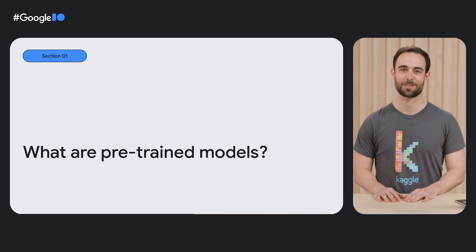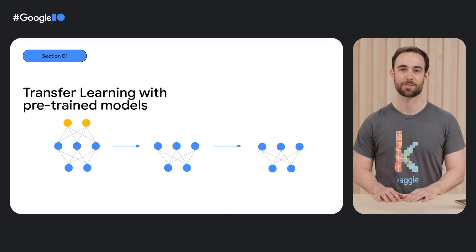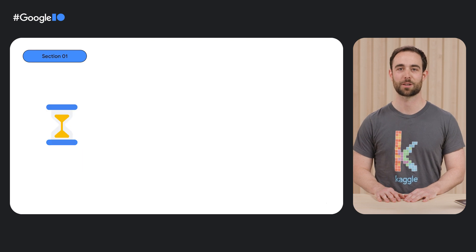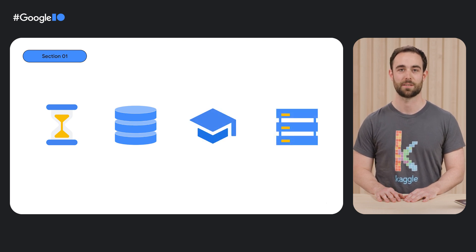Do you have a machine learning problem but only limited data you can use to solve it? Or maybe you're looking to improve your performance in a Kaggle competition. For these and many other cases, pre-trained models can help. Pre-trained models are machine learning models that have been trained on a large dataset and which have learned general features or patterns in data, which you can use or fine-tune to your own problem in a process called transfer learning. Building machine learning models from scratch can take a lot of time, use a lot of data, require specific expertise, and be resource-intensive. Starting with a pre-trained model can give you a head start on your own task, saving you time and money. Because of these benefits, the process of fine-tuning pre-trained models has emerged in the last few years as one of the dominant paradigms in modern AI systems.